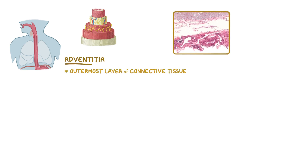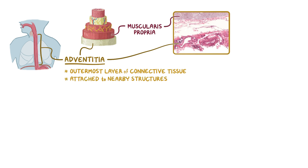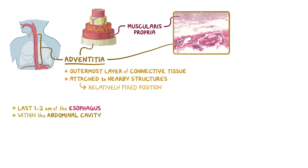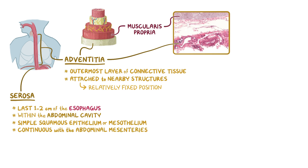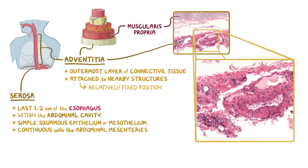The majority of the esophagus is surrounded by its outermost layer of connective tissue called the adventitia. In this image, the underlying muscularis propria can still be seen at the top. The adventitia is attached to nearby structures, such as retroperitoneal organs, which keep the esophagus in a relatively fixed position. The last 1-2 cm of the esophagus are within the abdominal cavity after crossing the diaphragm. This portion of the esophagus has an outer layer of connective tissue called the serosa, which is covered by a simple squamous epithelium, or mesothelium, that's continuous with the abdominal mesenteries. At higher magnification, we can see additional structures within the connective tissue, such as a large artery, lymphatic vessels, and adipocytes. These structures would be found in both the adventitia as well as the serosa.